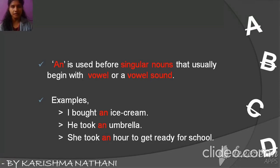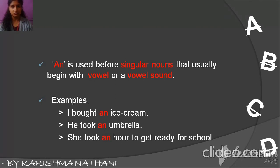He took an umbrella. Umbrella starts with a vowel and is a vowel sound, so: an umbrella. She took an hour to get ready for school. Here, hour starts with a consonant H, but H is silent and it sounds like a vowel — 'our'. So: an hour.